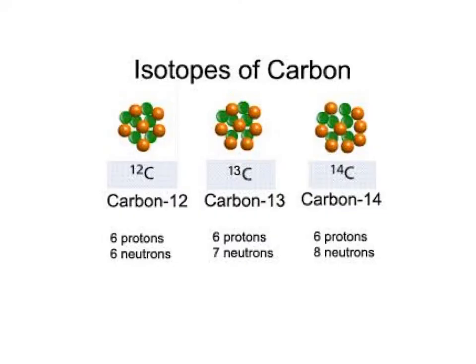An example of naturally occurring isotopes are the isotopes of carbon. So carbon has three known isotopes, carbon-12, carbon-13, and carbon-14. So the only difference, if you notice, they all have six protons.